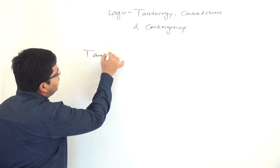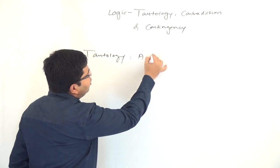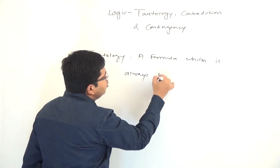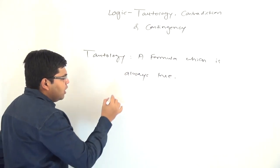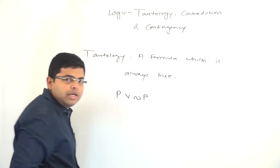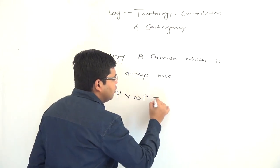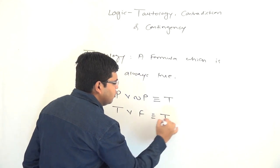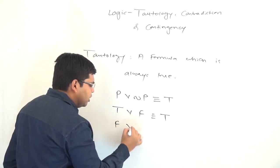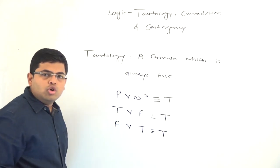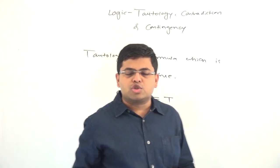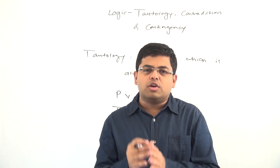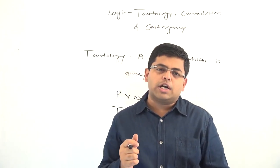By tautology we mean a formula which is always true. For example, if you consider the formula p or negation of p, then independently of the value of p, this formula will always evaluate to true. If p equals true, this formula becomes true or false, which equals true. And if p equals false, this formula becomes false or true, which is again true. In simple words, a formula which is always true will never become false — independently of the values of the variables, the formula will always be true. Such a formula is called a tautology.